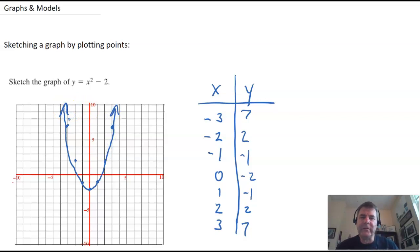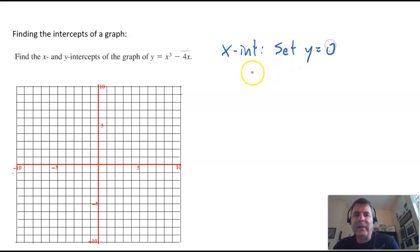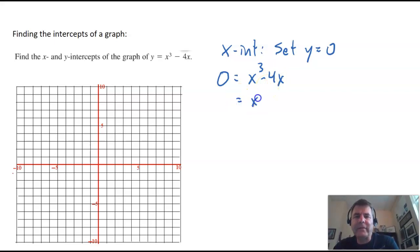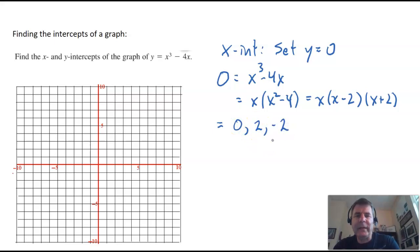When in doubt, you can always just use an xy chart to get points for your graph. Another handy graphing tool is finding x and y intercepts. To find x intercepts, you set y equal to 0. So I say 0 equals x cubed minus 4x, and I solve for x by factoring out an x. We get the difference of two squares, and we have three x intercepts: one at 0, one at positive 2, and one at negative 2.